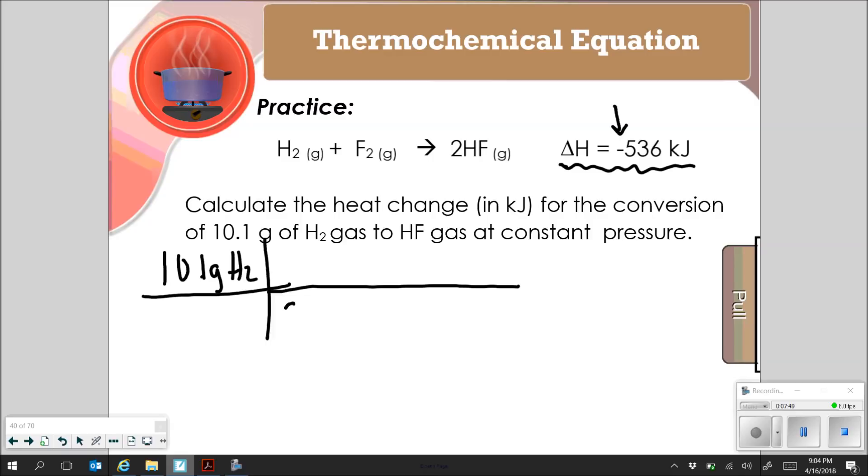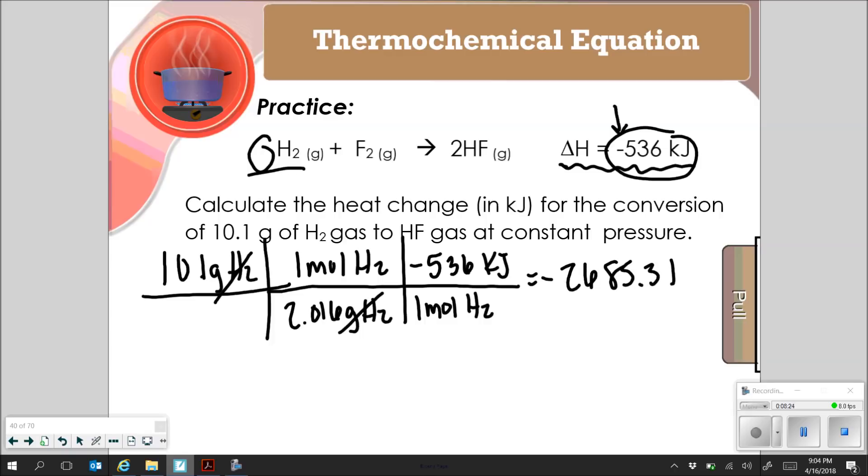So if I've got 10.1 grams of hydrogen gas, I'm going to convert that to moles. So 2.016 grams of hydrogen is one mole of hydrogen. And then for every one mole of hydrogen, I've got negative 536 kilojoules. So for every one mole of hydrogen, I've got negative 536 kilojoules of energy lost. And when I work that out, I get 2685.31. That's negative. And if I solve using significant figures, I can have three significant digits. So that's going to be negative 2690 kilojoules of energy lost. And don't forget the negative there at the end.